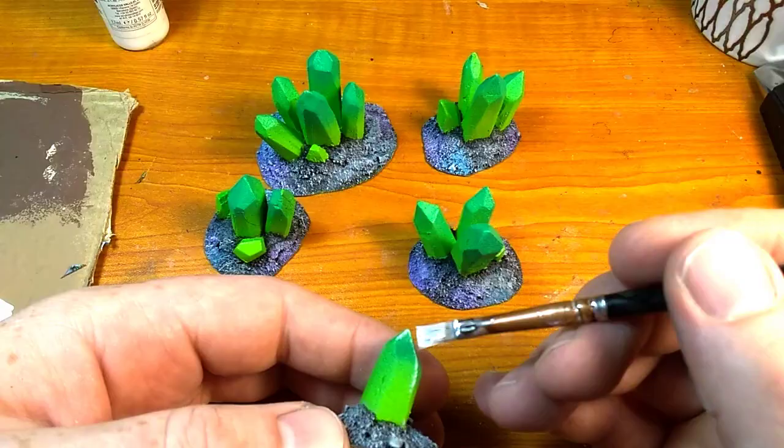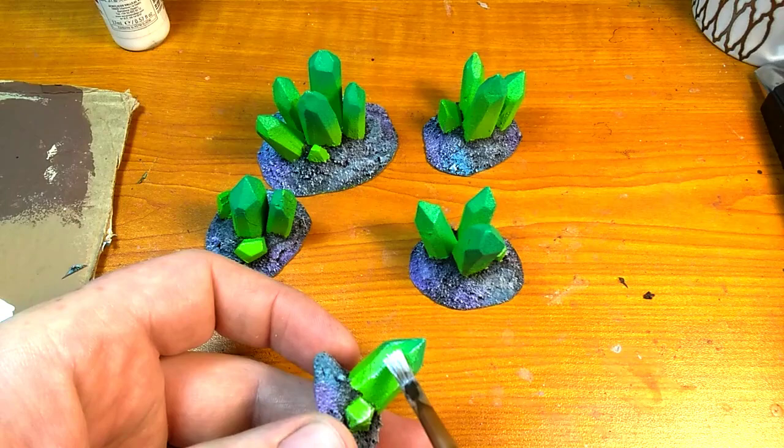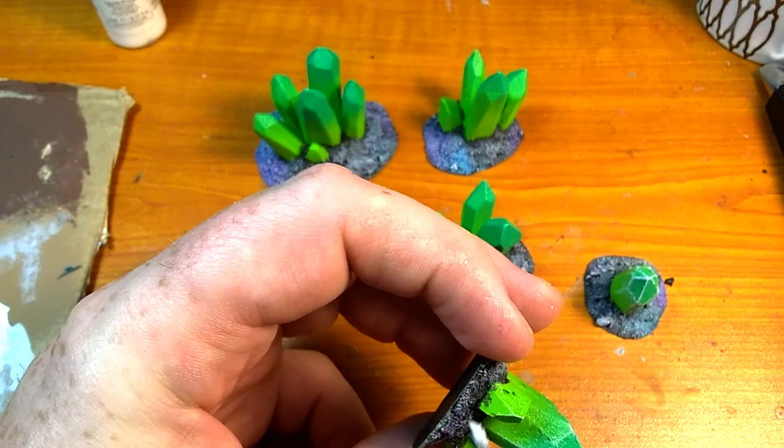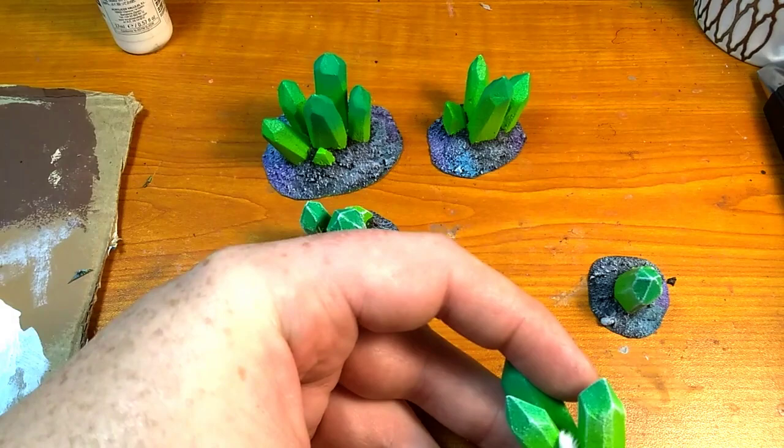Now I want to highlight the edges of the crystals with a bright white. For this I use a Vallejo cold white because it is fairly opaque and I don't have to go over the pieces repeatedly to get the effect I'm going for.